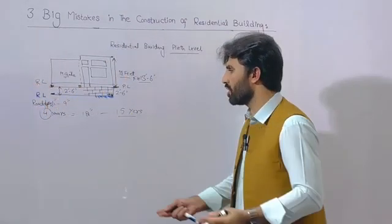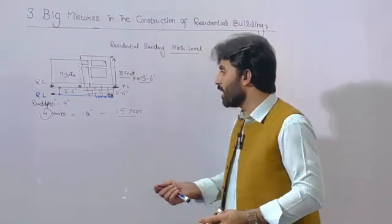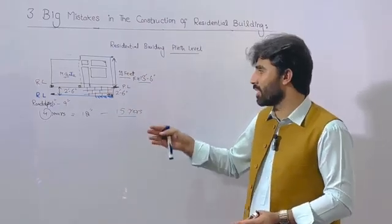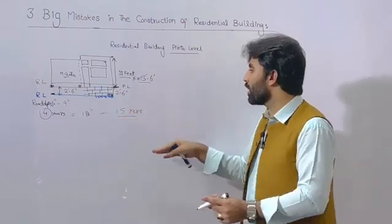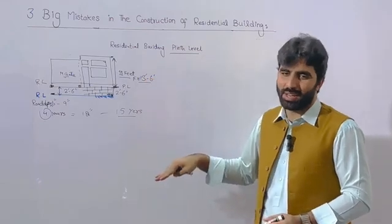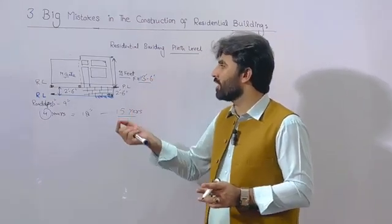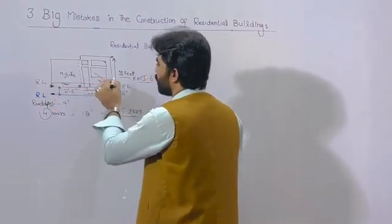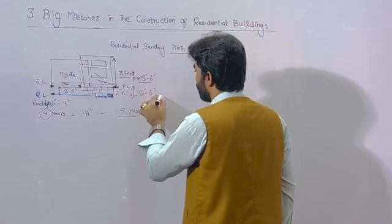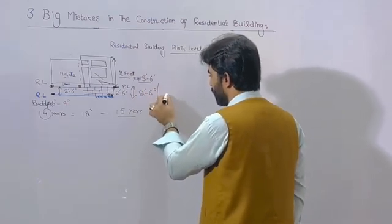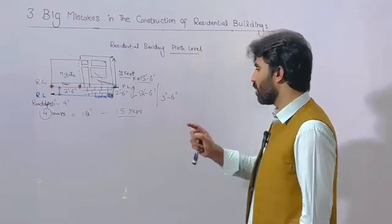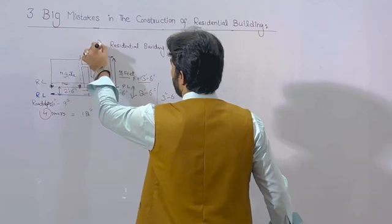This happens especially in Pakistan, Afghanistan, India, and Africa — they go upward every few years without removing old material, so the road depth keeps rising. When it rises to your house level or plinth level, flood water and everything will enter through your main gate and affect your building. So the minimum plinth level is 2 feet 6 inches, but I recommend normally keeping it at 3 feet 6 inches above road level. The building level must always be above road level, otherwise you will face serious problems. This is the first big mistake.